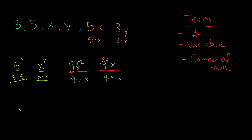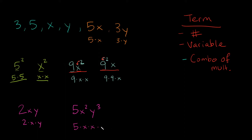Another common example you might see is 2xy, which is the same thing as 2 times x times y. Or you could see 5x squared y cubed, which is the same thing as 5 times x times x times y times y times y. This 2 is attached to the x, which is why we have two x's, and this 3 is attached to just the y, which is why we have three y's. The 5 out here is just by itself.